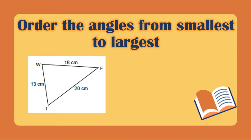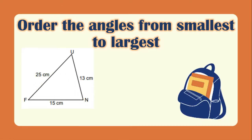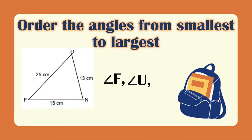The shortest side is 13 cm and the opposite of the shortest side is angle F. Next is 18 cm, the opposite of 18 cm is angle T. The longest side is 20 cm and the opposite of it is angle W. In the next example, the shortest side is 13 cm which is side UN and its opposite is angle F. Next is 15 cm, the opposite of FN is angle U, and the last is 25 cm which has the largest angle, which is angle N.